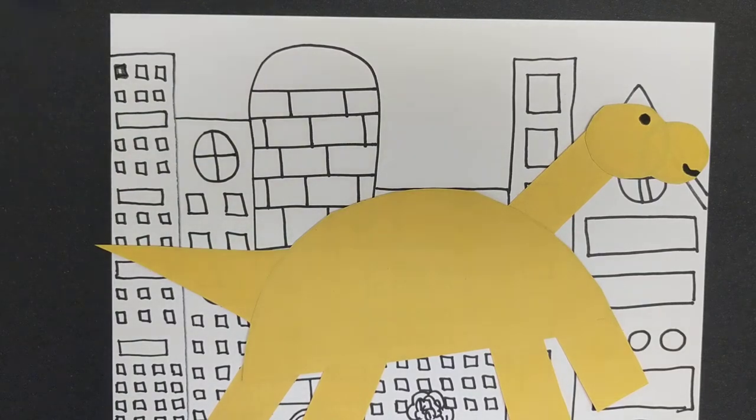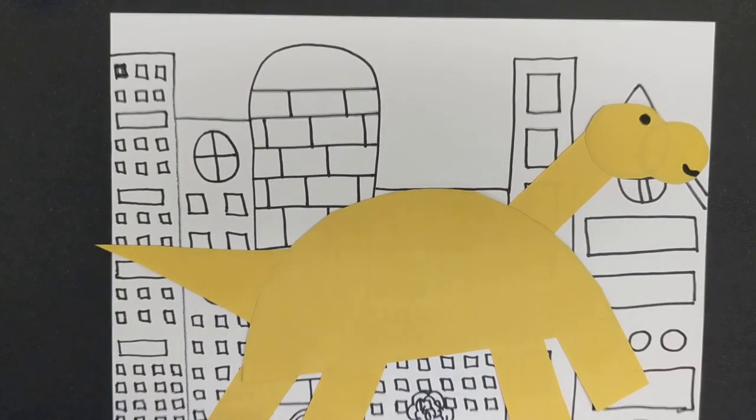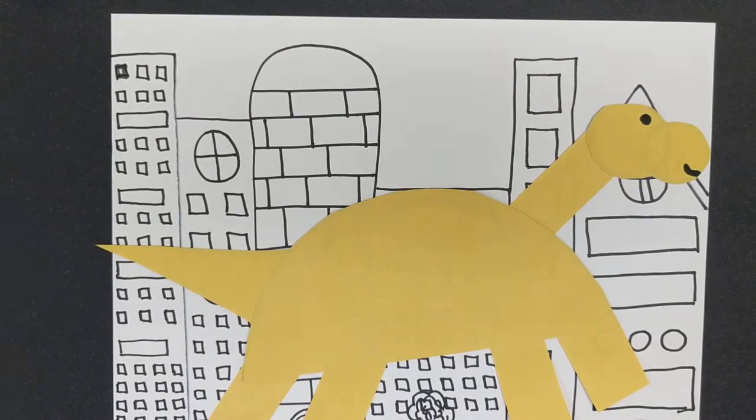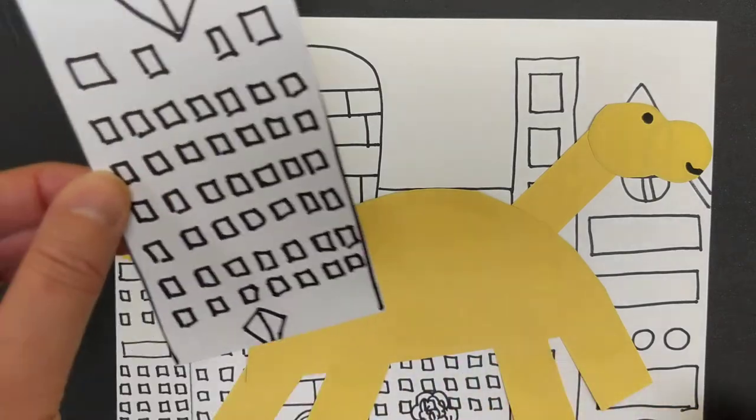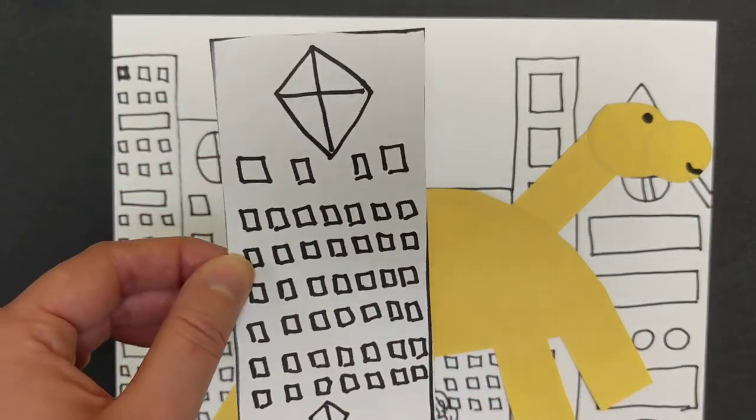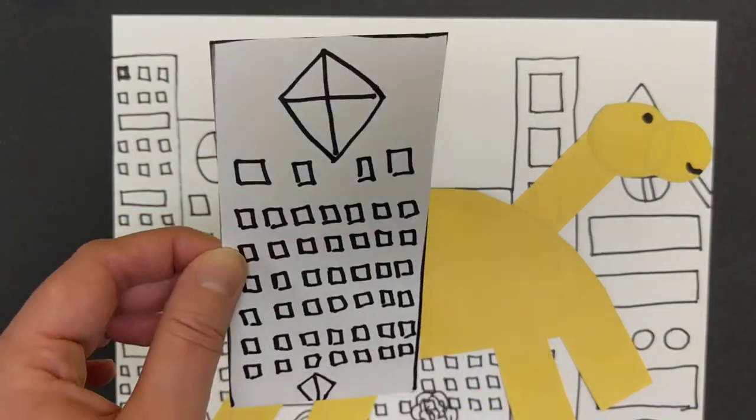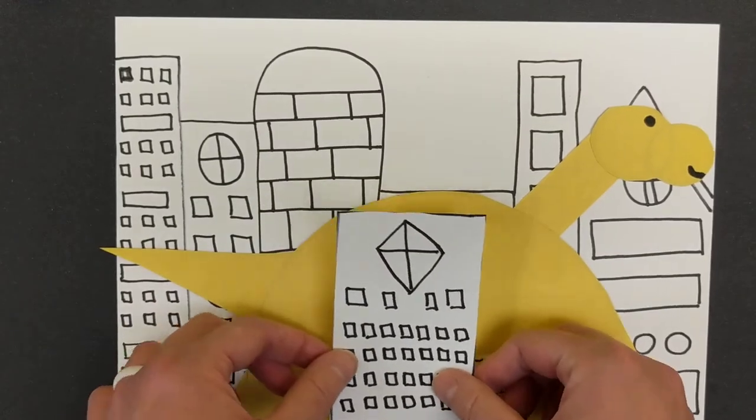Now I wanted to add another element to this one because what I really like about the book is that there are so many fun layers, and I think Bernard Most does such a good job of making the dinosaurs really feel like they're a part of the city. So as I mentioned, if you have two sheets of paper, you can get a second sheet of paper and you can make some more buildings.